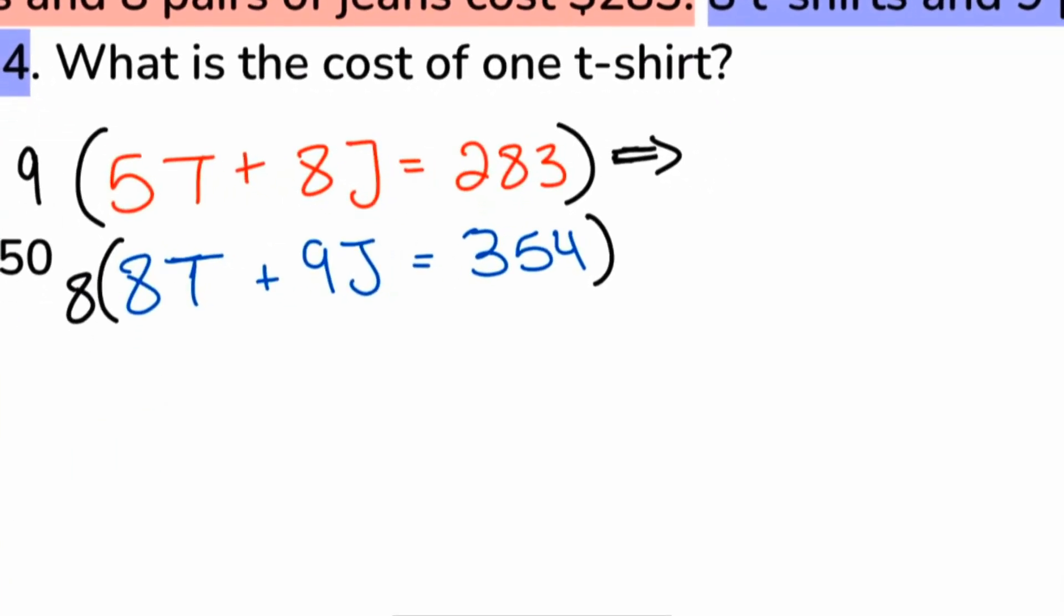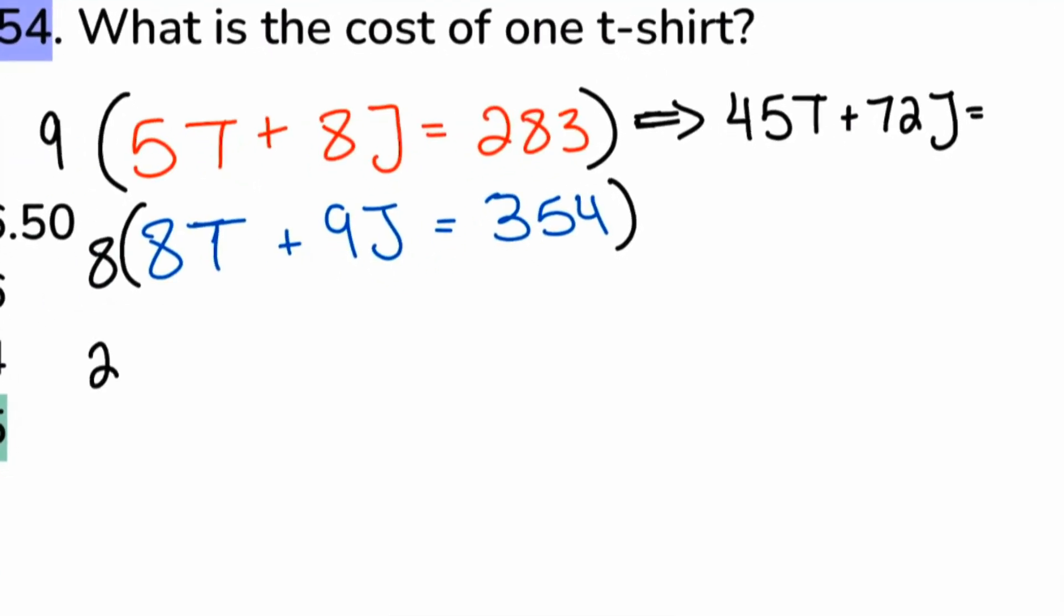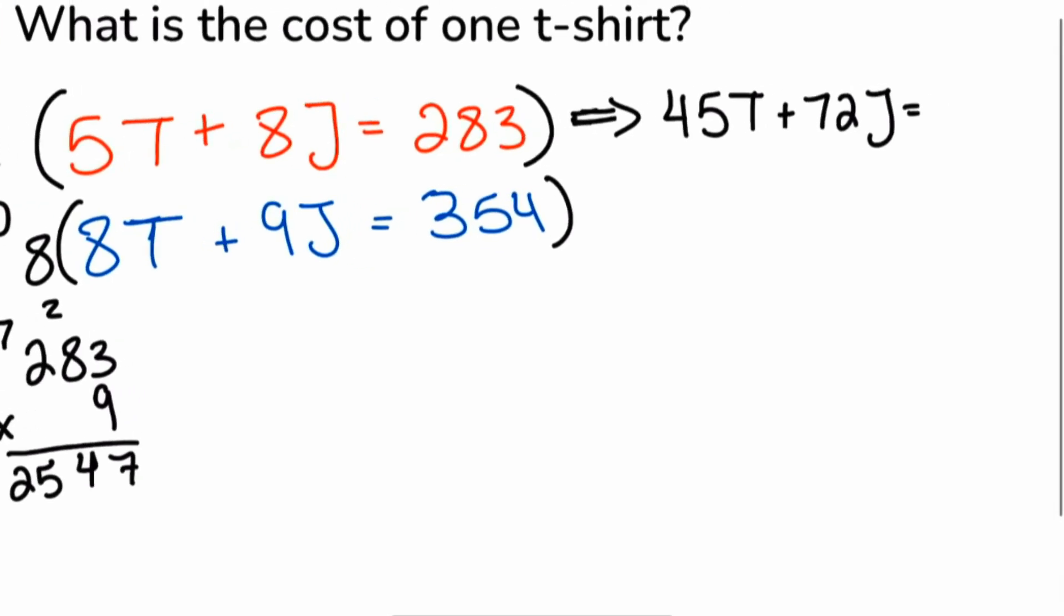Let me zoom in just a little bit here. 9 multiplied by 5, that'll be 45T. 8 multiplied by 9 is 72J. And then we have 283 multiplied by 9. And we can do that quickly here on the side if we need to. So in doing so, 27, 72, that'll be 74. And now we have 2 times 9, which is 18, and 25 with a 7. So we have 2547 right over here.